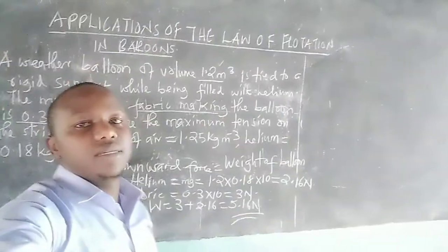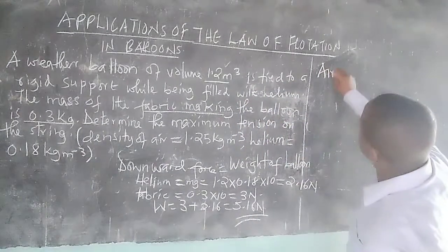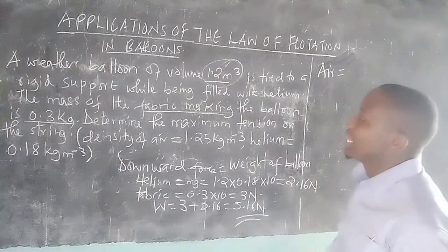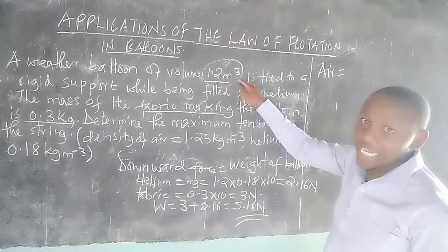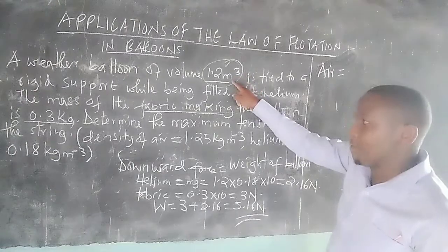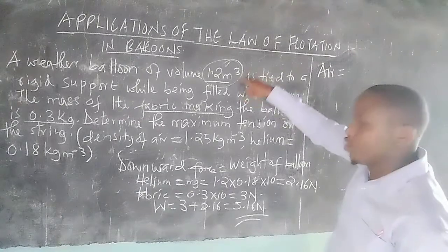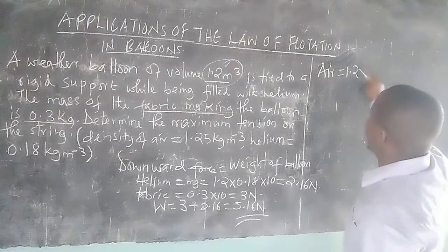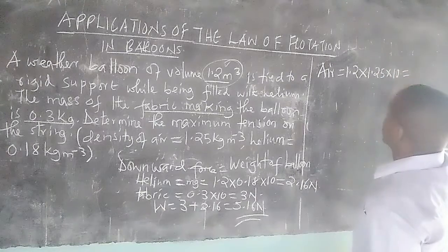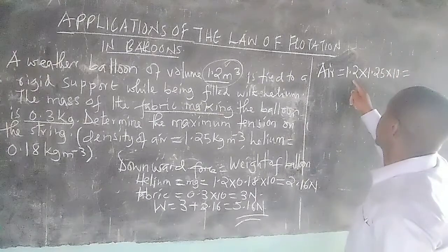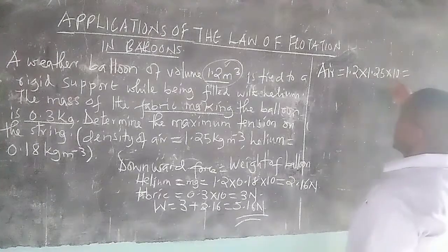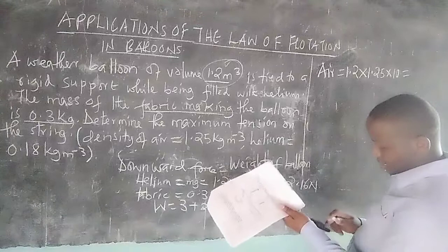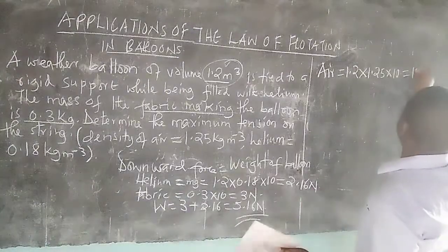Now we can get the upward force, which is due to the air displaced. The balloon has a volume of 1.2 cubic meters, so it displaces an equal volume of air as it floats. The volume of air displaced is 1.2 cubic meters. We get the mass of air by multiplying the volume by the density of air — 1.25 kilograms per cubic meter — then multiply by g, which is 10, to get weight. So 1.2 times 1.25 times 10 gives us 15 newtons acting upward.